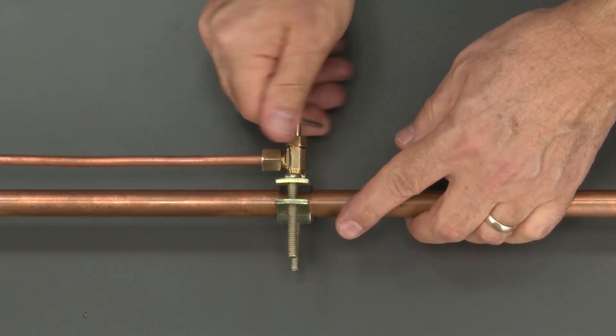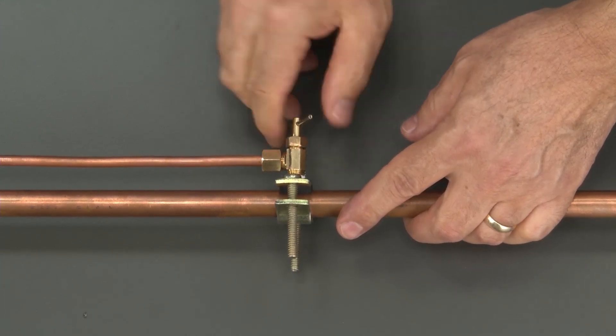Find the saddle valve and turn it clockwise until it stops.